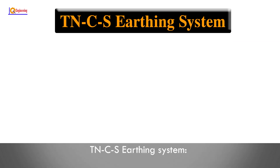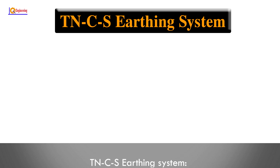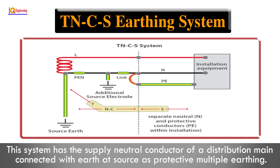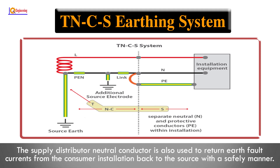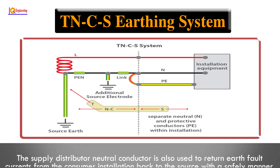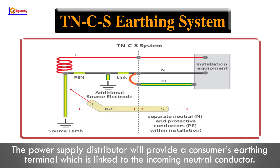TNC earthing system: The supply neutral conductor of a distribution main is connected with earth at the source as protective multiple earthing. The supply distributor neutral conductor is also used to return earth fault currents from the consumer installation back to the source in a safe manner. The power supply distributor provides a consumer's earthing terminal linked to the incoming neutral conductor.